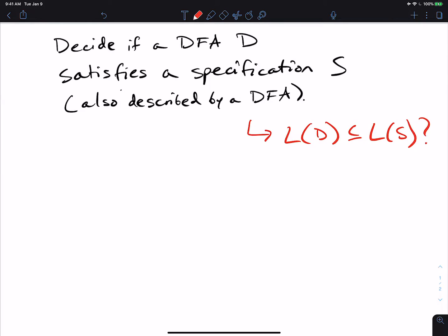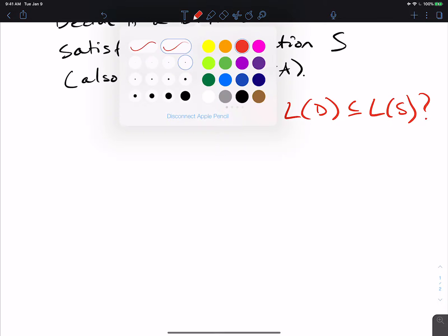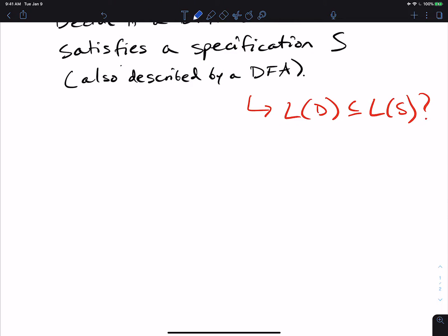So I tell you the DFA D, I tell you the DFA S, and I want to know if one is a subset of the other, if D is a subset of S's language. Now, what this is really saying is, is there a string that D will accept that S does not accept? So the real question we want to ask here is, is there a W in L of D and W not in L of S?